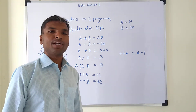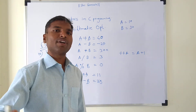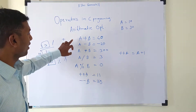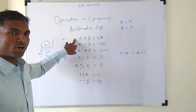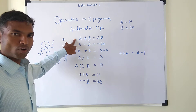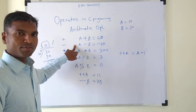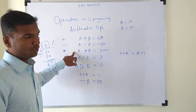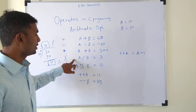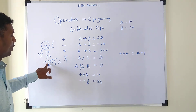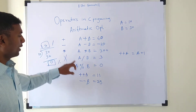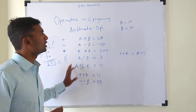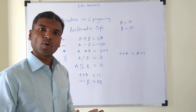So these are the arithmetic operators in C programming language. There are different operators in C which we are going to discuss in further videos. To review: in arithmetic operators, the first is the plus or unary plus operator, useful for addition. Second is the minus or unary minus operator, useful for subtraction. Then multiplication, which is not a unary operator. Then division, which gives you the quotient, and the modulus operator, which gives you the remainder. Finally, plus plus is the increment operator and minus minus is the decrement operator. This is all about arithmetic operators in C programming language. Thank you.